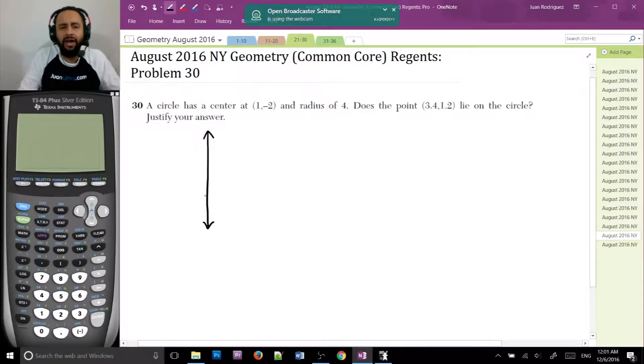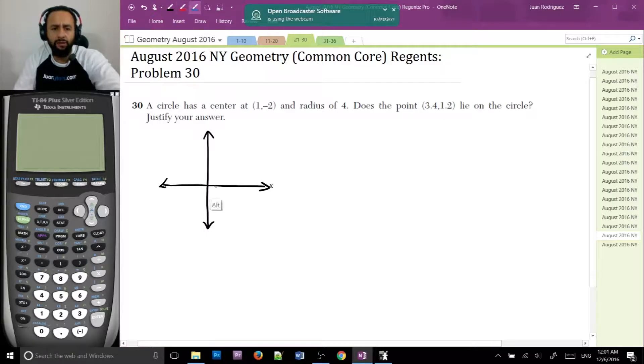So first off, I draw a diagram for every single geometry problem. So here's me drawing a diagram. And this circle has a center at 1, -2. So at 1 and -2. That's the center. And a radius of 4. So it goes up 4, over 4, down 4, and over 4. That is my circle. That is an approximation for the circle.